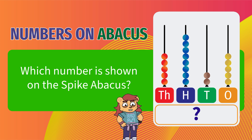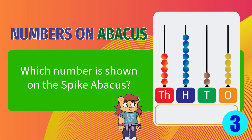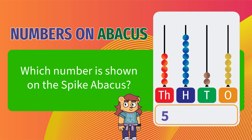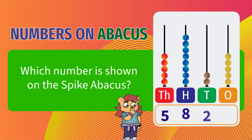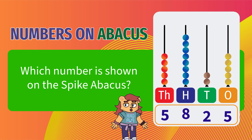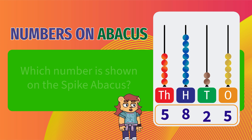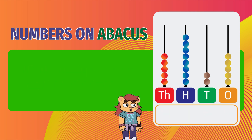What number is shown on the spike abacus? Five thousandths, eight hundredths, two tens, five ones. The number is 5825.